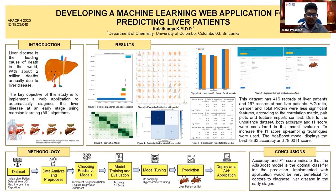Initially, the dataset was analyzed and preprocessed. In this step, missing values were identified and replaced with the mean of the particular data column. Categorical features like gender were transformed as 0 and 1. Also, descriptive analysis of the data was conducted, and bivariate analysis, Pearson correlation metrics, and feature importance results were obtained.